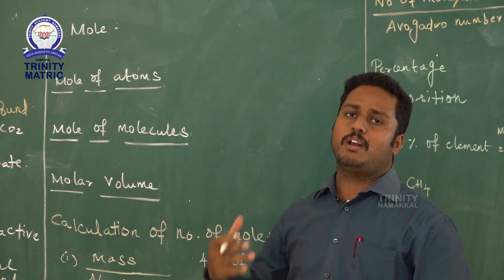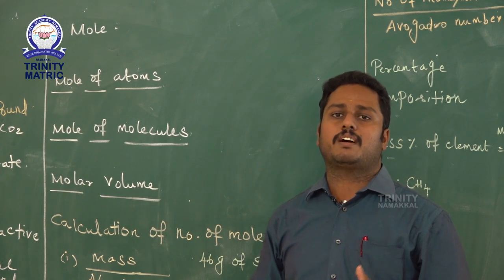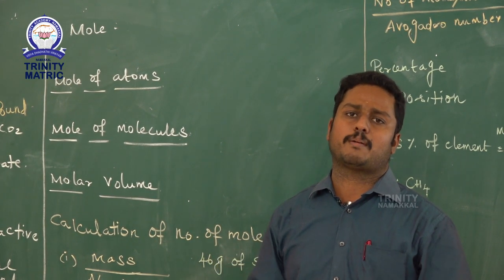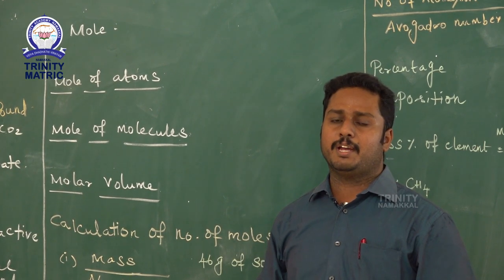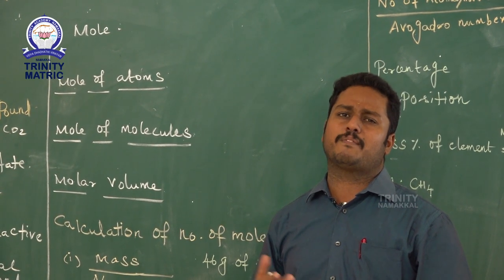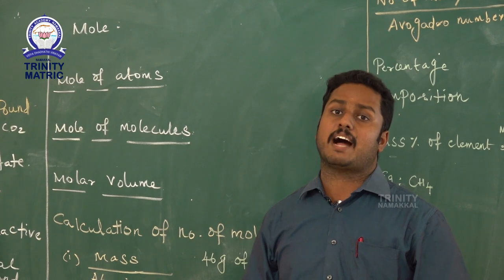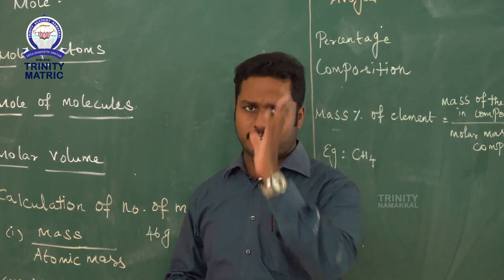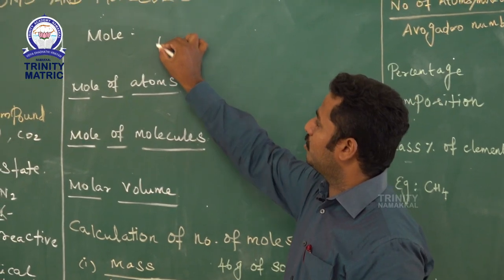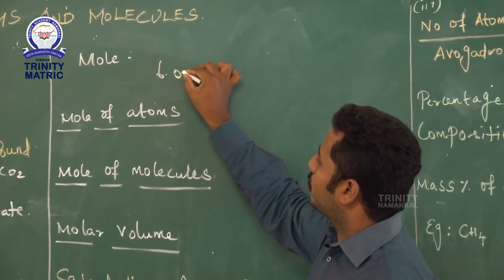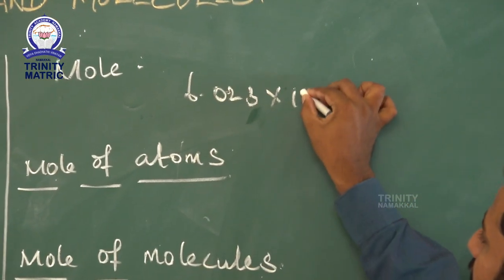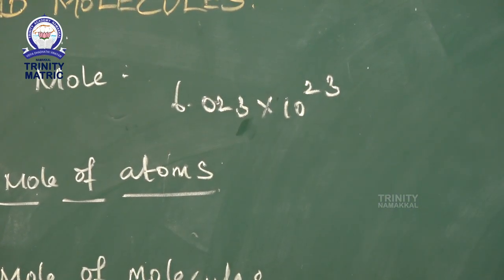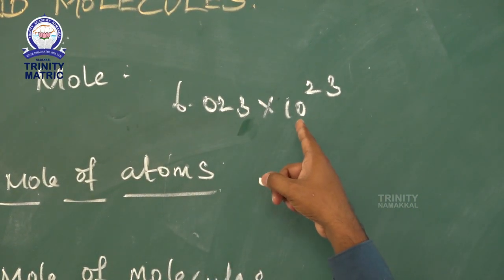So there is one term called 'mole.' One mole is defined as the amount of substance which contains Avogadro's number of particles. One mole of any substance contains Avogadro's number of particles, and the value of Avogadro's number is 6.023 × 10²³.